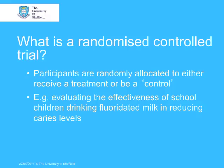First, just a brief description of what a randomised control trial is. The main features are that participants are randomly allocated to either receive a treatment or a control treatment. An example would be a study evaluating the effectiveness of drinking fluoridated milk by school children to look at whether it was effective at reducing levels of dental caries. This would involve randomly allocating children in schools to either have fluoridated milk or ordinary milk.